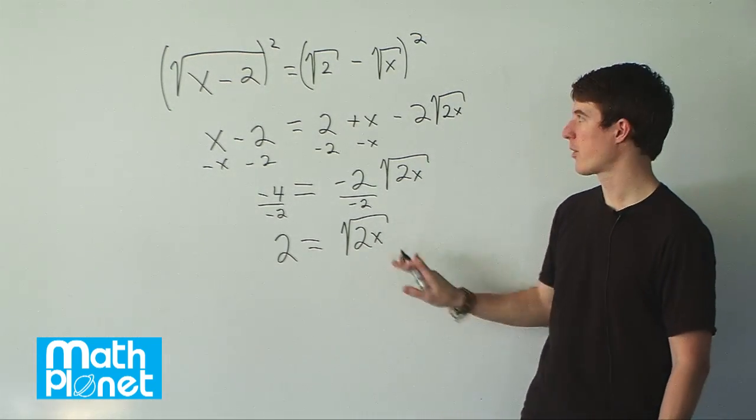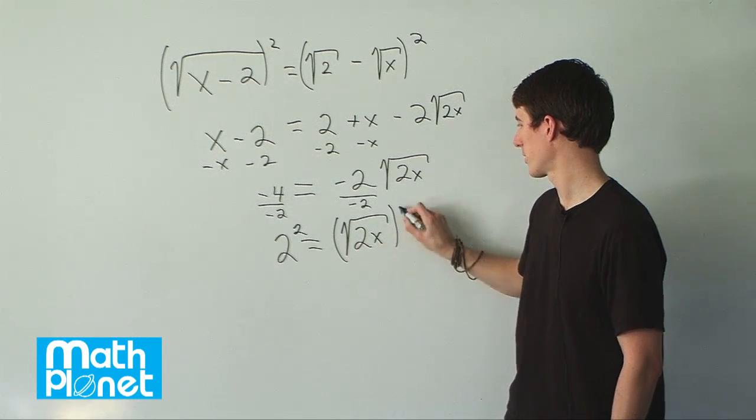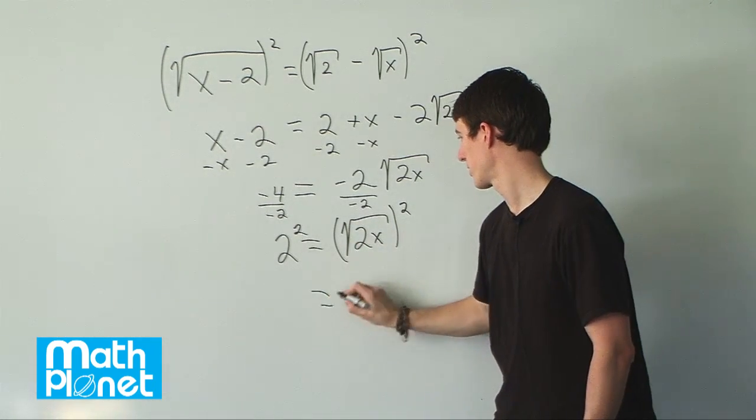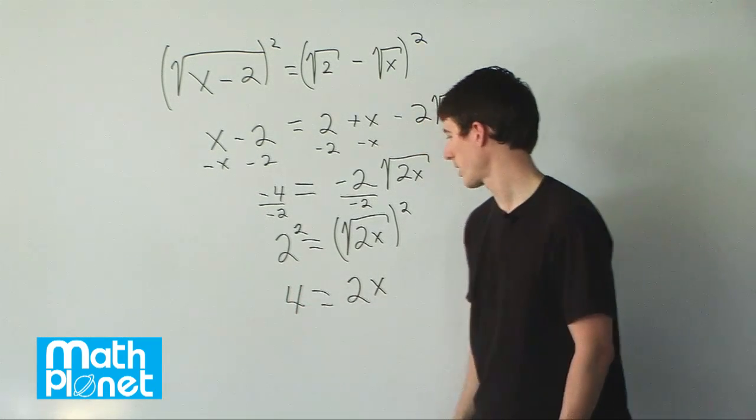So we're almost done. Now again, we have a square root. We can square both sides to get rid of that. So square this and square this. That gives us 2x equals 2 squared is 4.